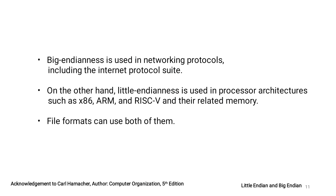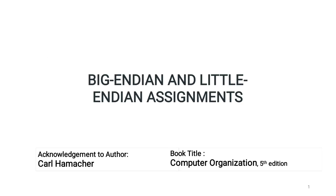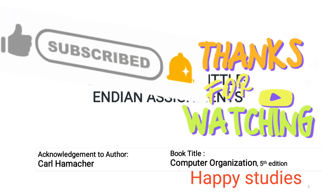Big Endian is used in networking protocols, including the Internet Protocol suite. Little Endian is used in processor architectures such as x86, ARM (Advanced RISC Machine), and RISC-V (Reduced Instruction Set Computers) and their related memory. File formats can use both Endianness types. In summary, Big Endian and Little Endian assignments define the order in which bytes of a word are stored in memory. I hope you understood. Thank you.